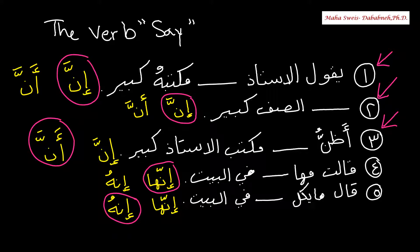Adunnu adna maktab al-austad kabeer. Qalat Maha: inna ha — 'that she is.' We can also attach the pronoun to inna. Number four: qalat Maha — inna ha fill bait. Number five: qala Michael — inna who fill bait — 'that he is in the house.'